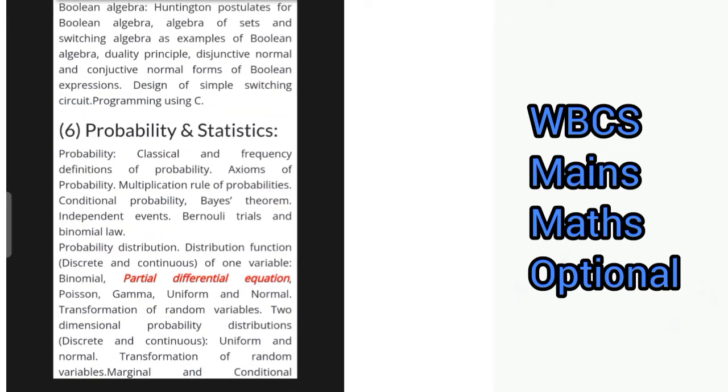Next we have Boolean Algebra covering Huntington postulates for Boolean algebra, algebra of sets and switching algebra as examples of Boolean algebra, duality principle, disjunctive normal and conjunctive normal forms of Boolean expressions, design of simple switching circuits, and programming using C.